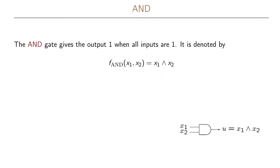Another boolean function that is very important is the AND function. The AND function takes two inputs in the most simple case, but it can be generalized to take many more inputs as well. The AND function is defined as giving the output one when all the inputs are one. We typically write this as x1 and x2 using this symbol, and sometimes you just write it x1 x2, removing the symbol in the middle.